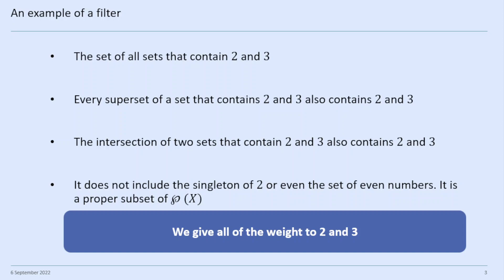And if we intersect two sets that contain two and three, that intersection will also contain both numbers. But it does not include the singleton of two, and it does not include all the even numbers, so it is a proper subset of the power set. In this world, we're giving all the weight to the numbers two and three — we're thinking of sets with two and three in them as big, and we don't care about any of the other numbers; we don't give them any weight at all in this model.